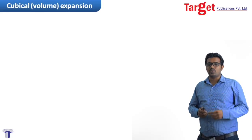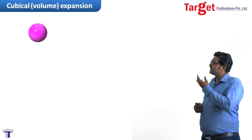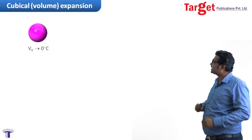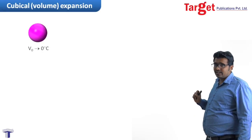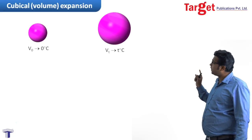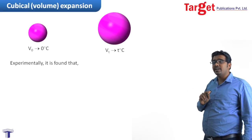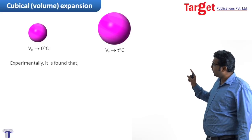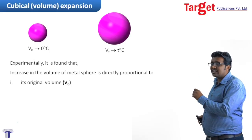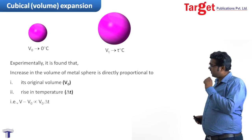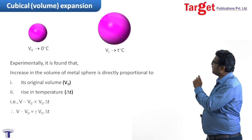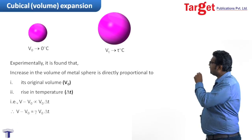The same goes with Cubical Expansion, also known as Volume Expansion. When a metal sphere is heated, it increases in size three-dimensionally. Let us consider an example with volume V₀ at 0°C, expanding to V at T°C. Increase in volume, V minus V₀, is experimentally said to be directly proportional to initial volume V₀ and rise in temperature delta T. Therefore, V minus V₀ is directly proportional to V₀ delta T.